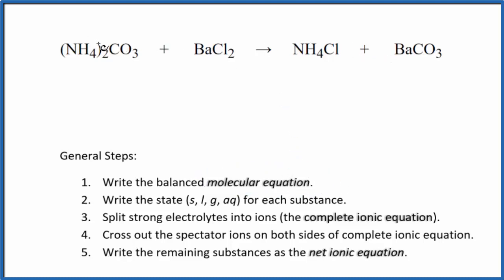As I look at the molecular equation, I can see I have an ammonium ion here. I have two of them here and only one ammonium ion over here. I'm going to put a two here. That also gives me two chlorine atoms, which is good because I have two there. I have one carbonate, one carbonate, one barium, one barium. So this equation is balanced. That's the molecular equation.